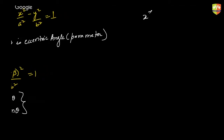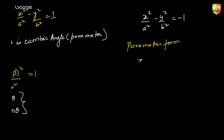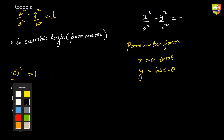For the conjugate hyperbola x²/a² − y²/b² = −1, the parametric form is x = a·tanθ and y = b·secθ.